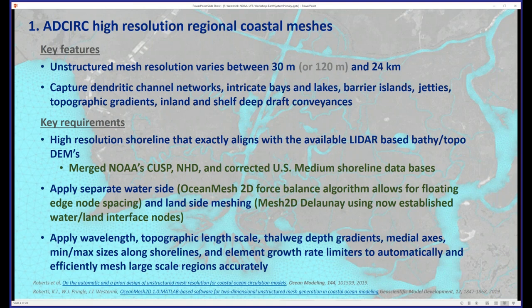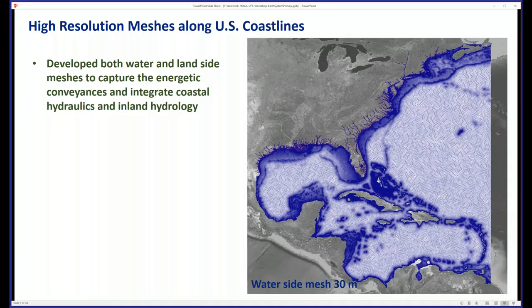We use the latest unstructured meshing technology — a lot of it we've built ourselves in a model called OceanMesh2D. We separate out the ocean side and the land side, because we do mesh over the coastal floodplain. We use a whole host of characterizations including wavelength, topographic length scale, fall wave identification, and novel things like medial axes and min-max functions along shorelines and element growth limiters to automatically and accurately mesh that.